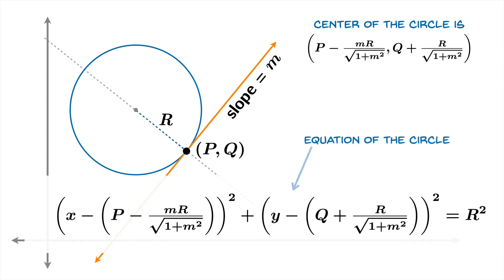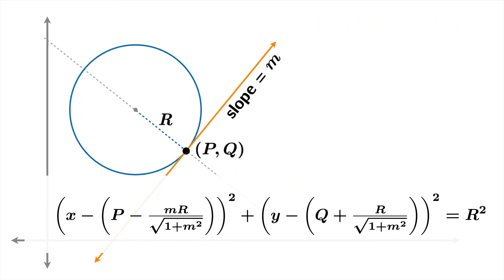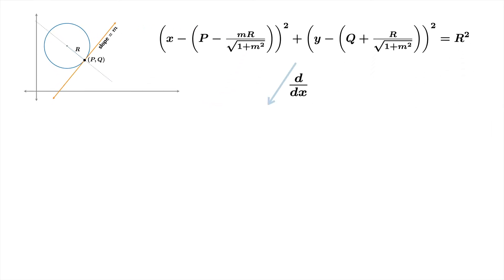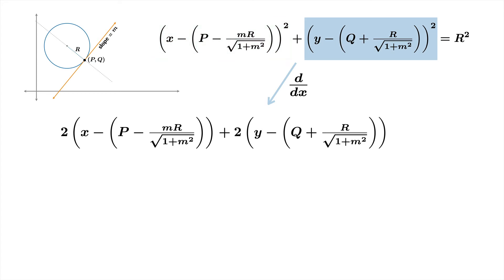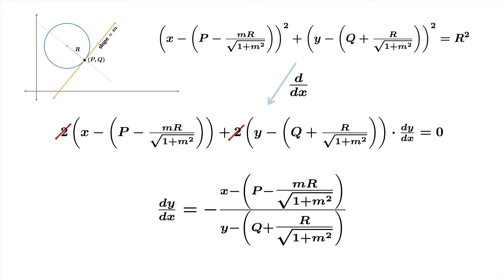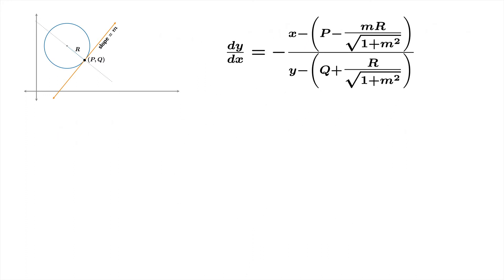Things are getting a little hairy but if we're patient and careful it'll all work out. Moving to the top, we take the derivative implicitly. Most of this is a constant, so the first term's derivative is 2(x − (p − mr/√(1 + m²))). The second term requires the chain rule with dy/dx implicitly. Dividing out the 2s and solving for dy/dx gives an implicit formula. Now we need the second derivative, which requires the quotient rule with the numerator and denominator identified.